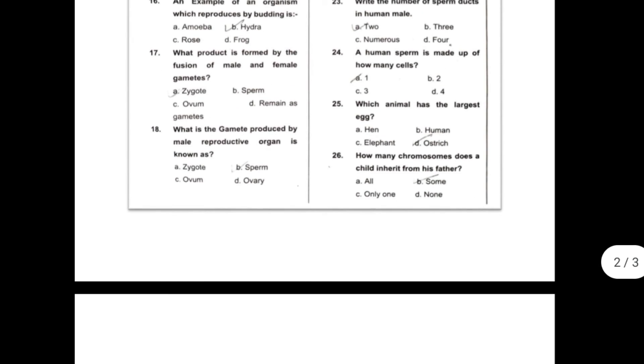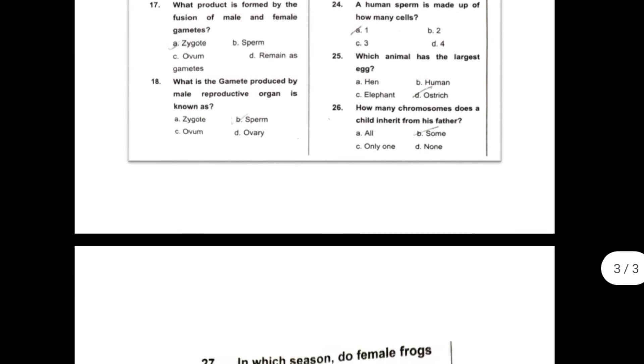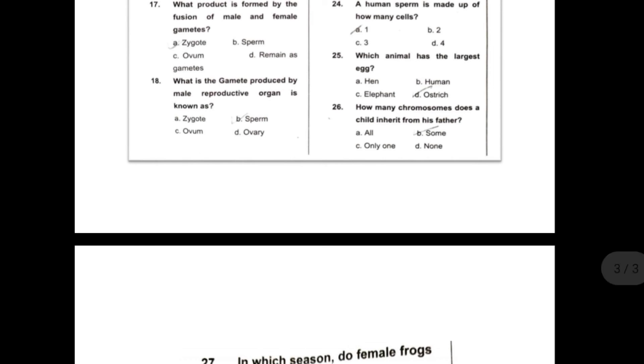Twenty-three, write the number of sperm ducts in human male. The answer is two. Twenty-four, a human sperm is made up of how many cells? The answer is one.